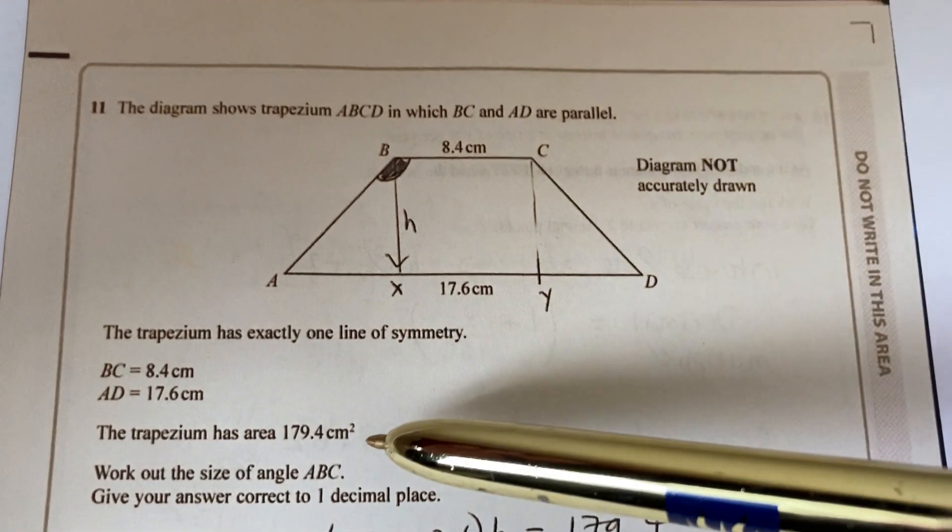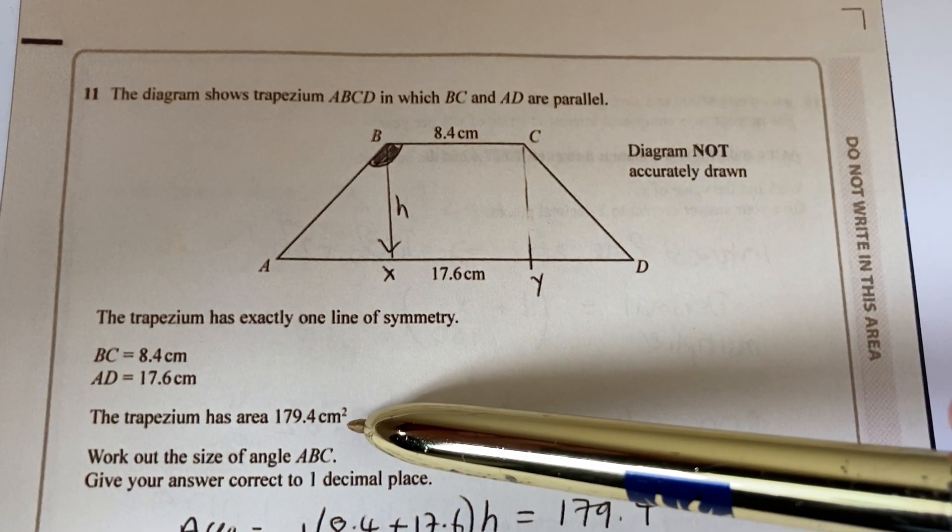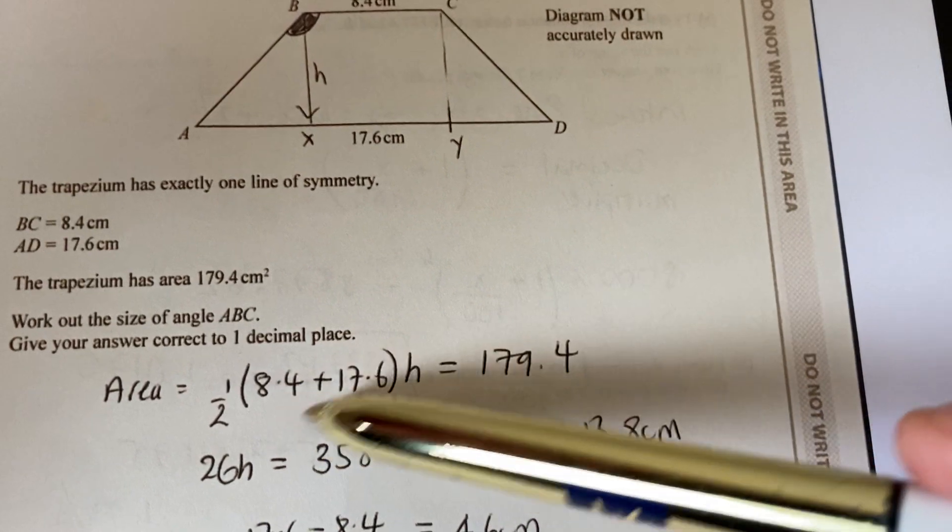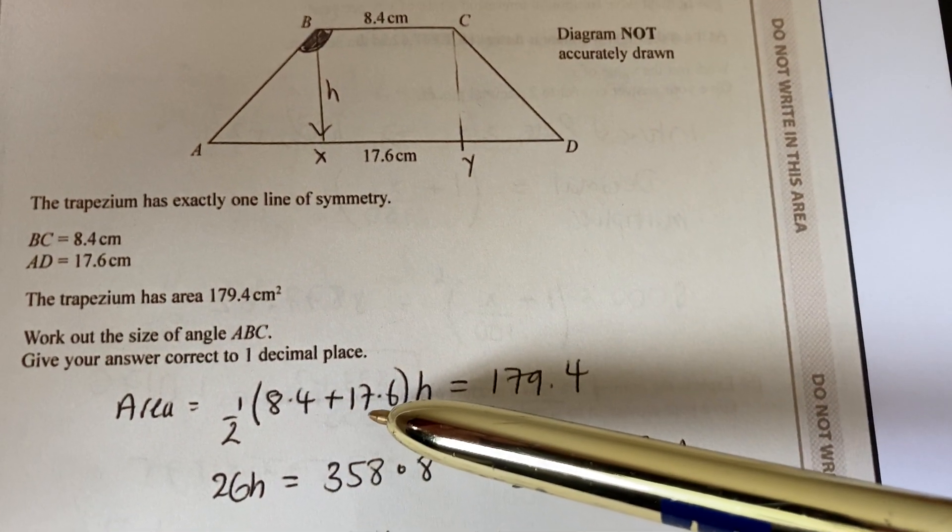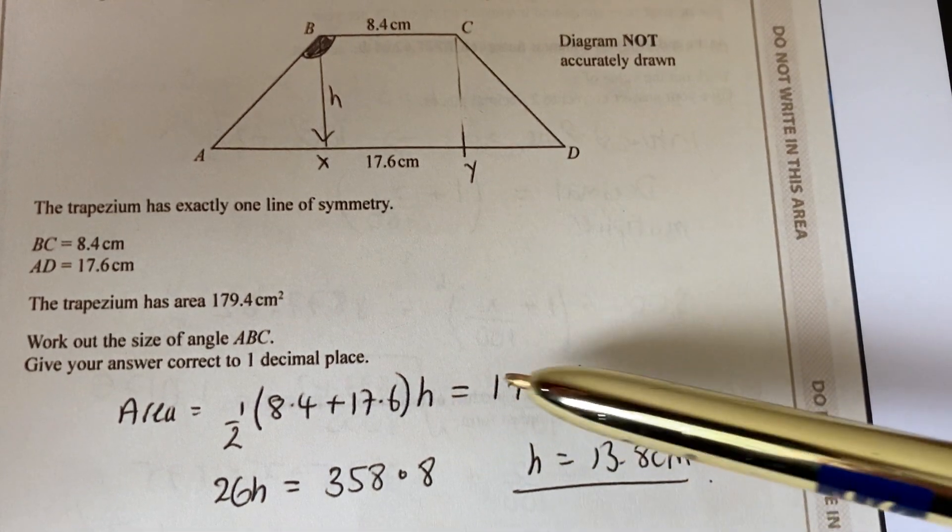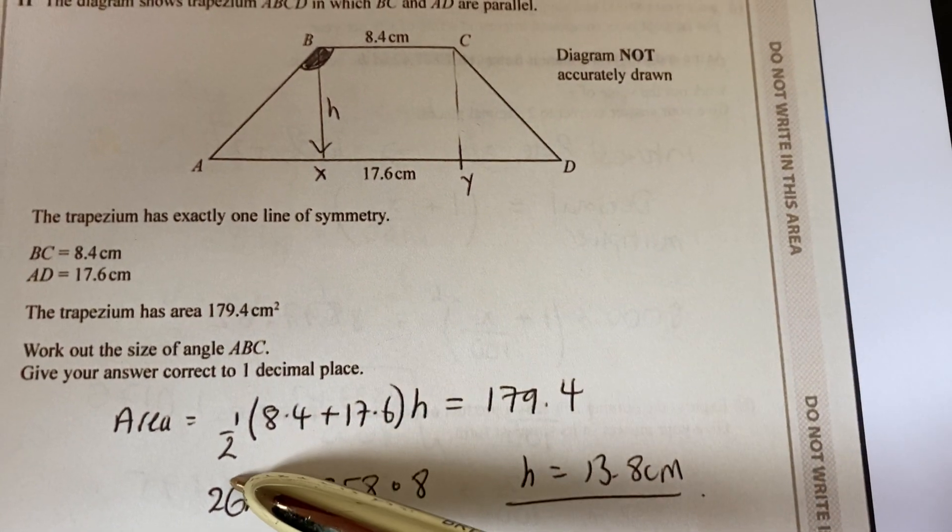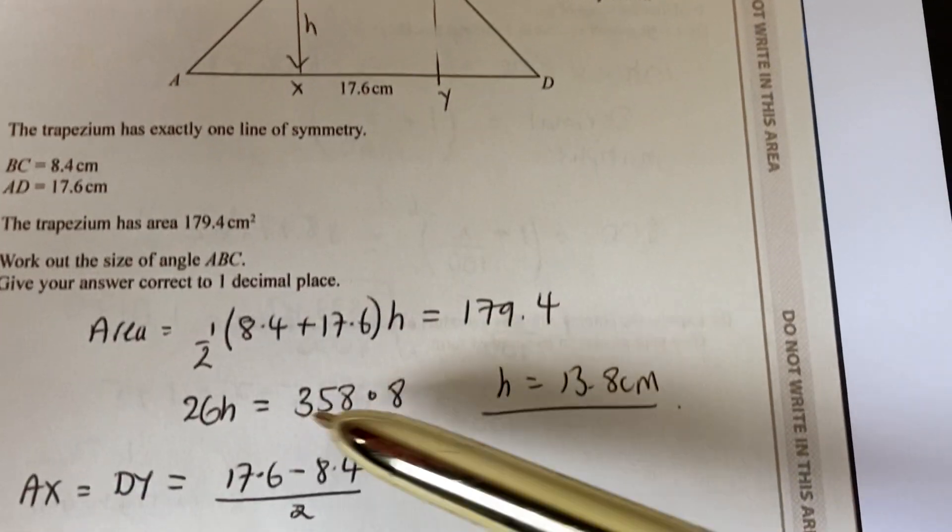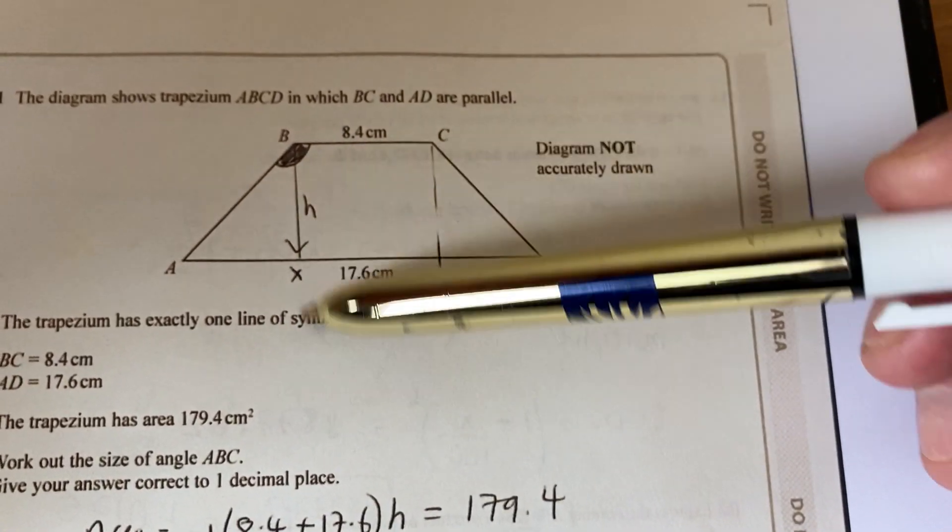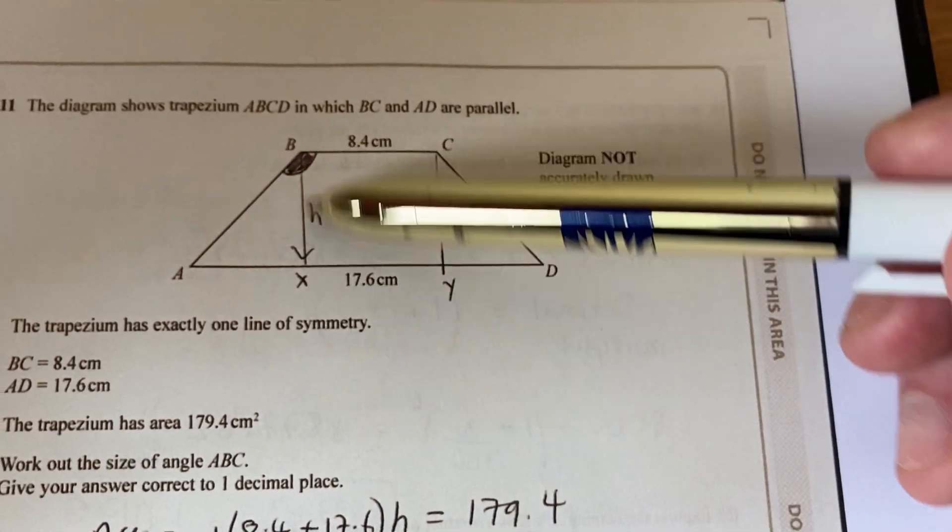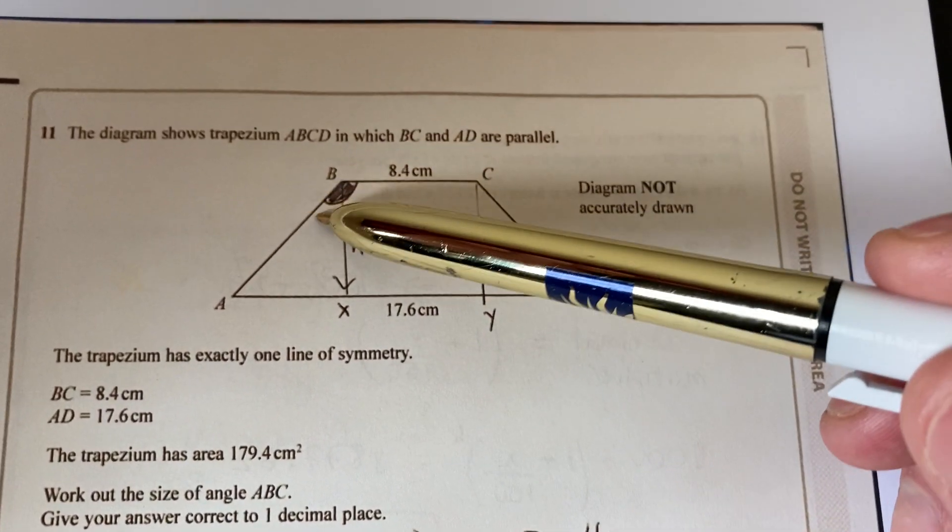We're told in the question that the area of the trapezium equals 179.4, so plugging in the numbers to the formula you get a half, add together the parallel sides, H. Undo all of that by multiplying through by 2 and dividing through by the bracket and you'll find that H equals 13.8. The distance between the parallel sides or the height of the trapezium is 13.8.